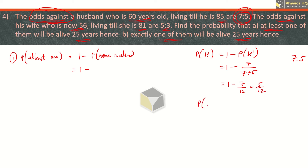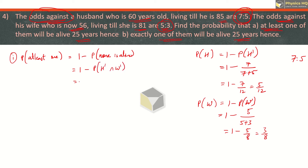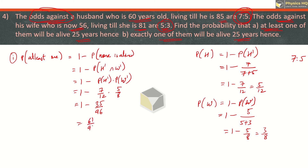Similarly for wife, odds against are 5 is to 3, so P(W dash) is 5 upon 5 plus 3, which is 5 by 8. Therefore P(W) is 3 by 8. None alive means neither husband nor wife is alive, so P(at least one alive) is 1 minus P(H dash) times P(W dash), which is 1 minus 7 by 12 times 5 by 8, which is 1 minus 35 by 96. So 96 minus 35 gives us 61 by 96.